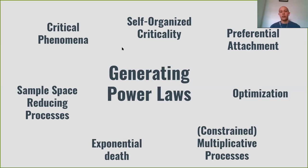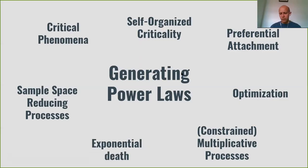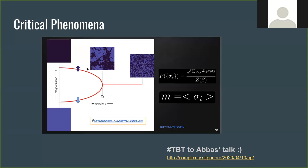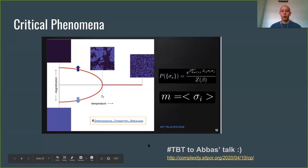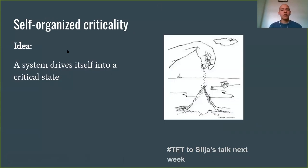To generate power laws, you can have a wide range of generating mechanisms — this is definitely not an exhaustive list. One of the main things that drove knowledge of this type of behavior was critical phenomena — what happens when you're transitioning from one state to another; this was covered in a previous talk. There's also self-organized criticality, which will be a separate talk. Basically, the idea is that you have a system that drives itself to a critical state.